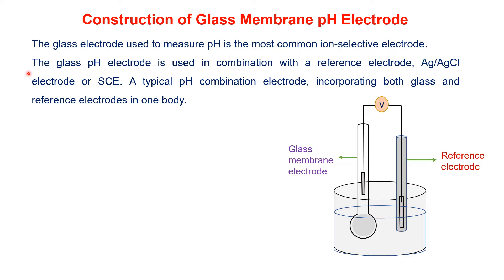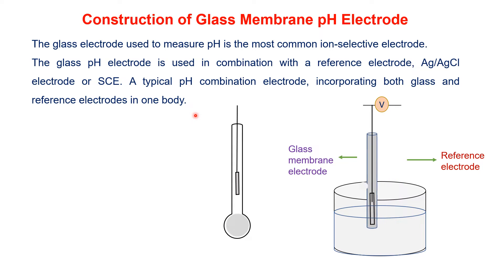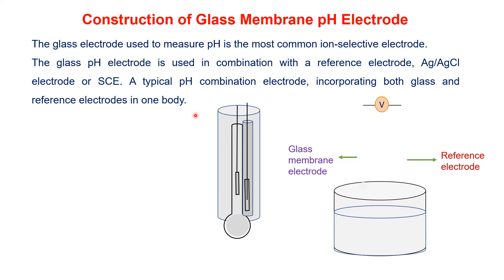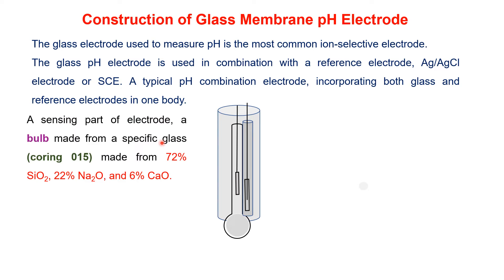The glass pH electrode is used in combination with a reference electrode. The reference electrode may be a silver-silver chloride electrode or a saturated calomel electrode. A typical pH combination electrode incorporates both the glass membrane electrode and the reference electrode in the same assembly — the modern glass combination electrode is an example of a tube inside a tube.